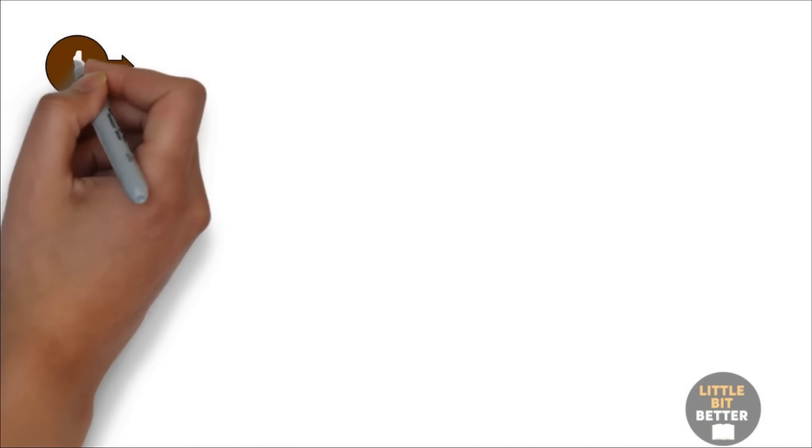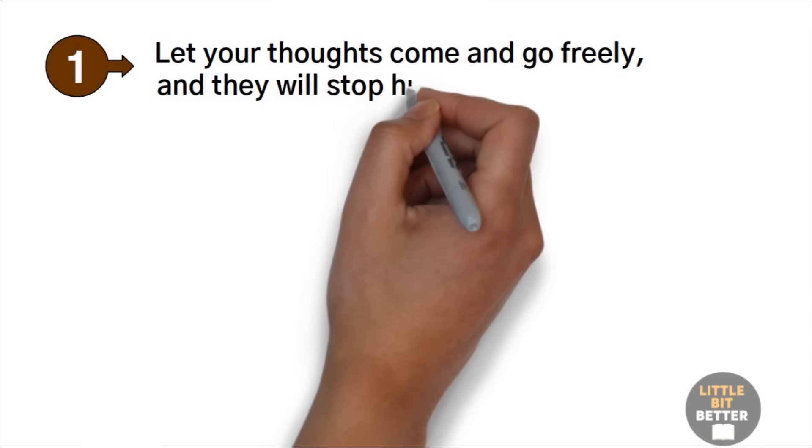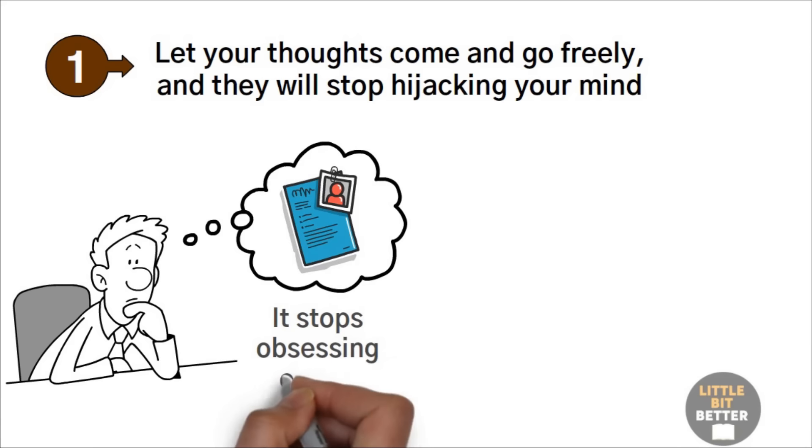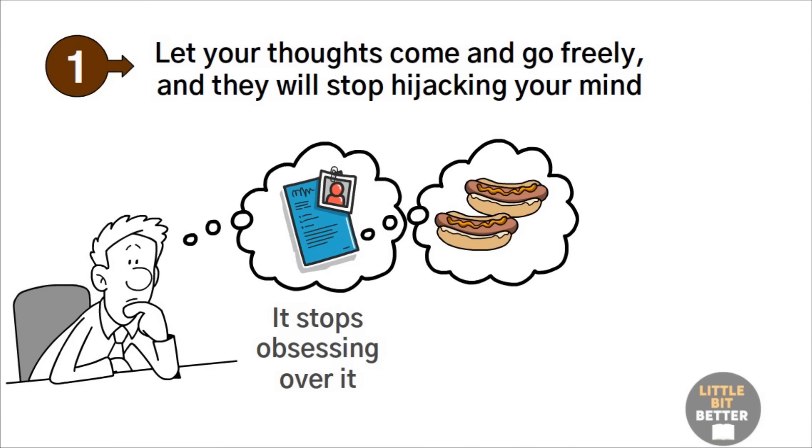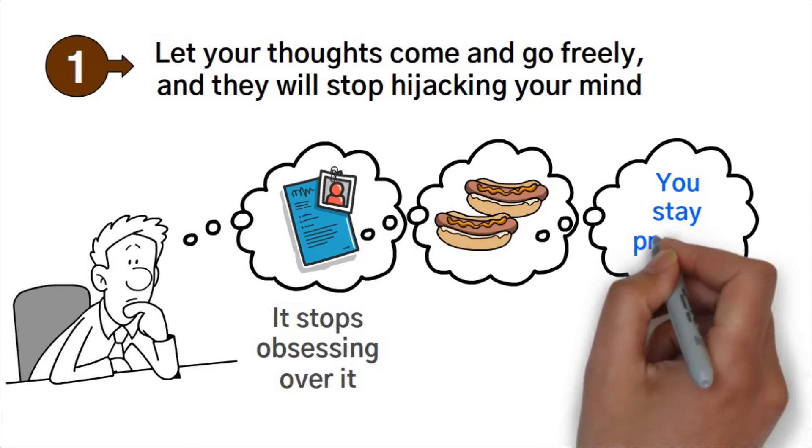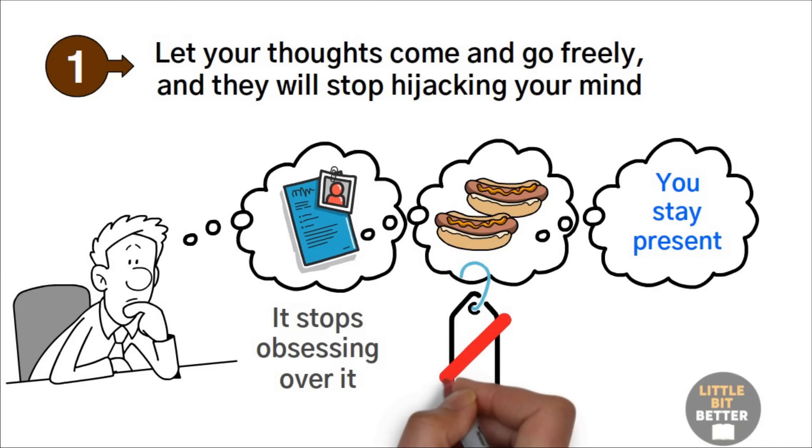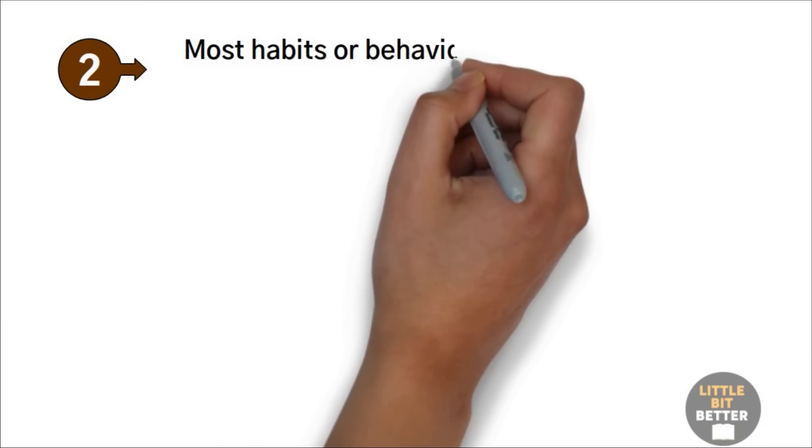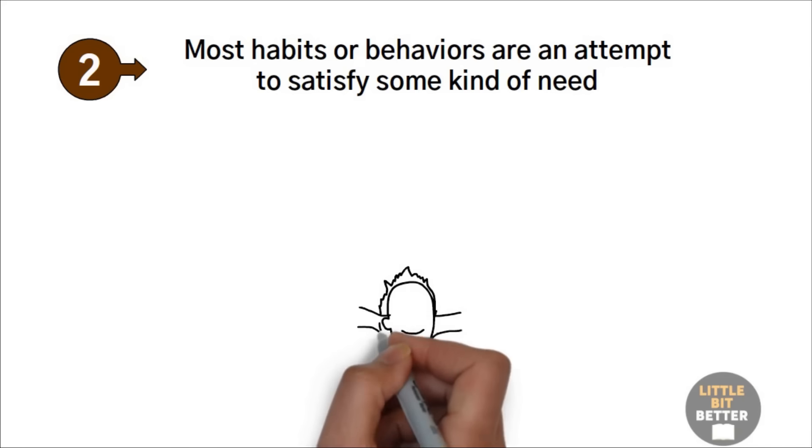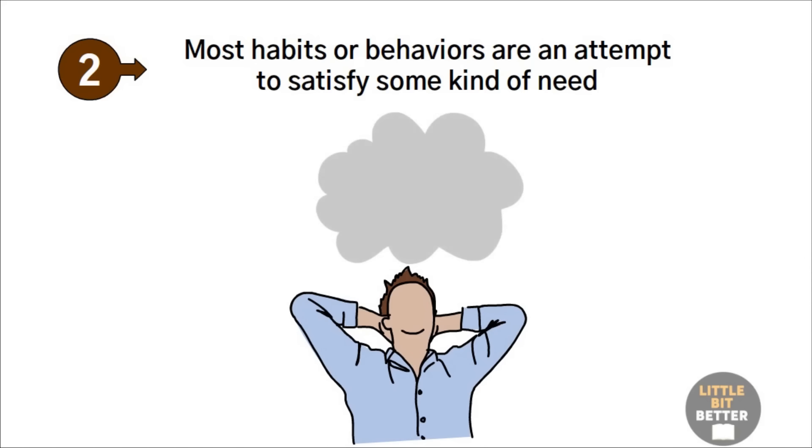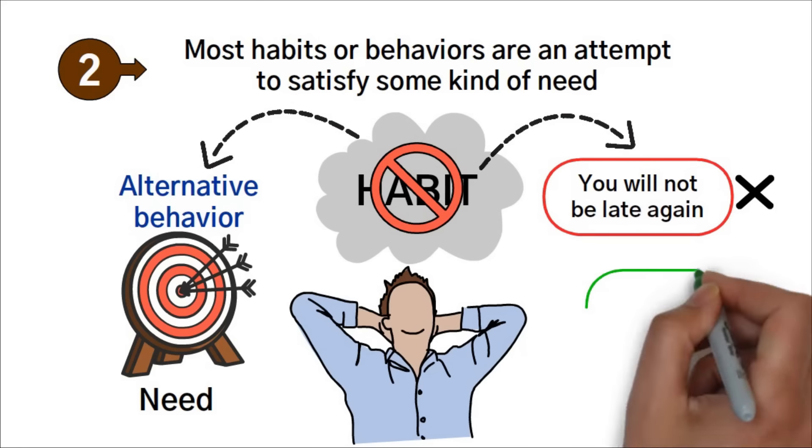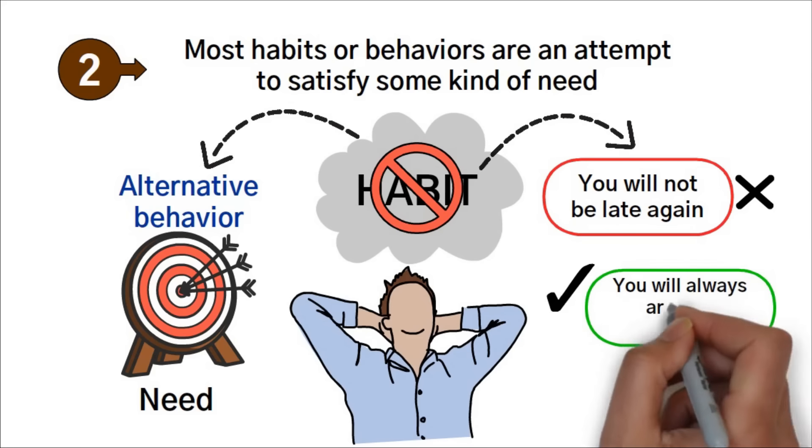Here are two solutions. Number one. Let your thoughts come and go freely, and they will stop hijacking your mind. If the brain is allowed to express a thought or feeling that it was previously trying to suppress, it stops obsessing over it. You don't have to act on your thoughts. You just have to let them wander through your mind and observe them. You stay present, watch and accept them as they are without labeling. This process is called surfing the urge. Number two. Most habits or behaviors are an attempt to satisfy some kind of need. It might be a need to have fun, reduce stress, or gain approval. Think about the habit you are trying to quit, and instead of banning it, see if you can come up with an alternative behavior that will satisfy the same need. For example, instead of telling yourself that you will not be late again, perhaps you should start telling yourself that you will always arrive five minutes earlier.